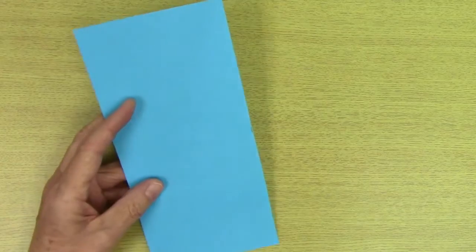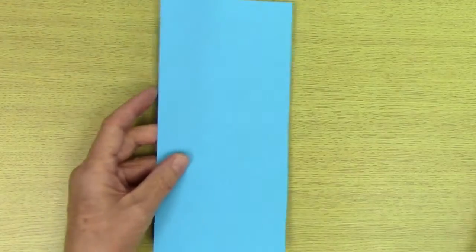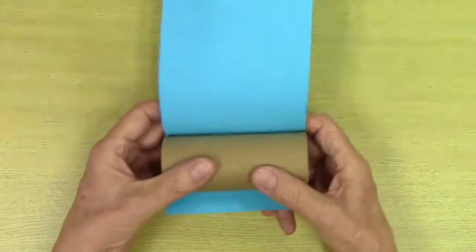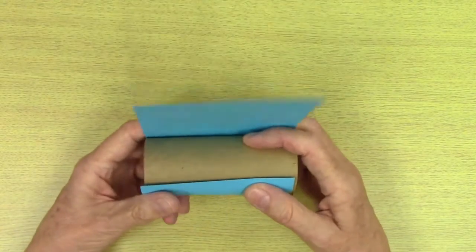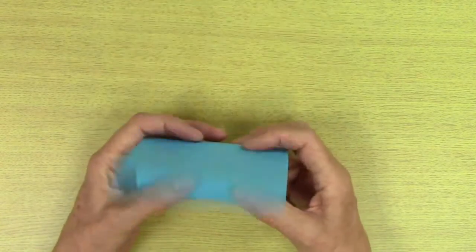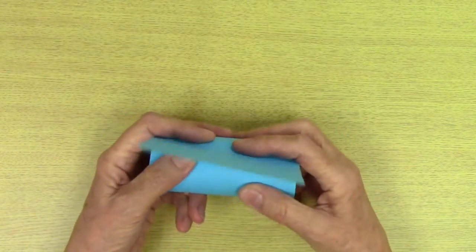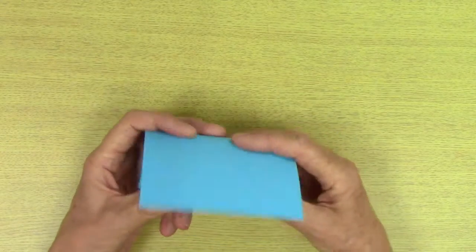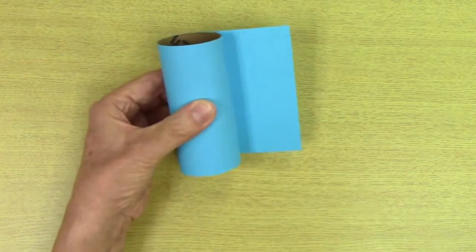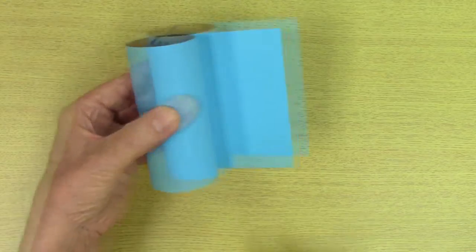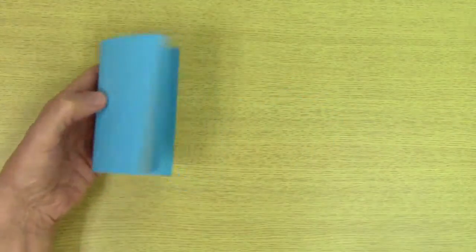Okay, so it probably doesn't need to be this long. So let's just make sure that it just goes around the tube. It can go a little, you just want to make sure it's not too short, but it doesn't need to be quite that long, so we'll go ahead and cut off. That's good.